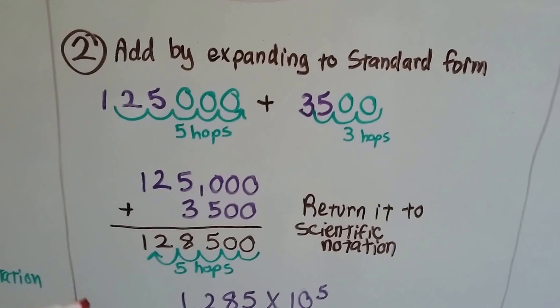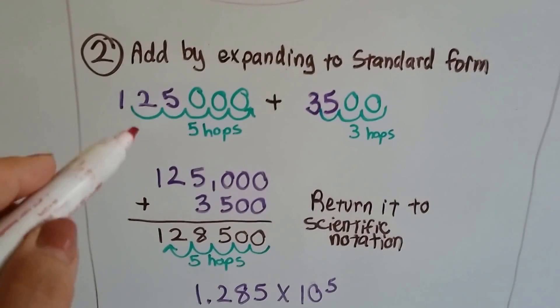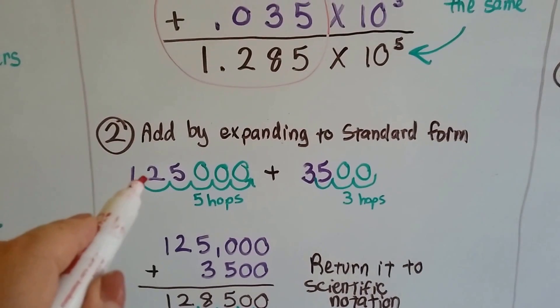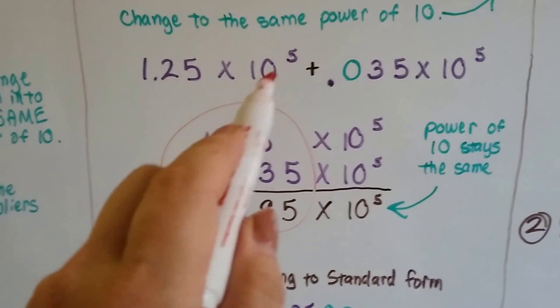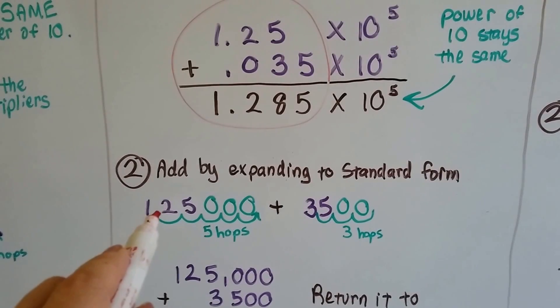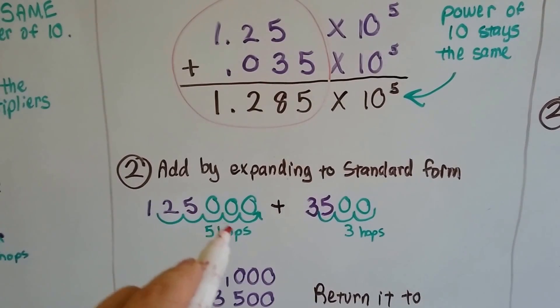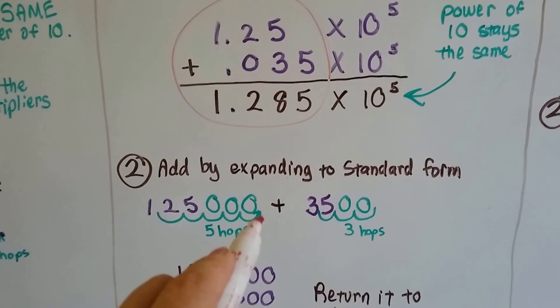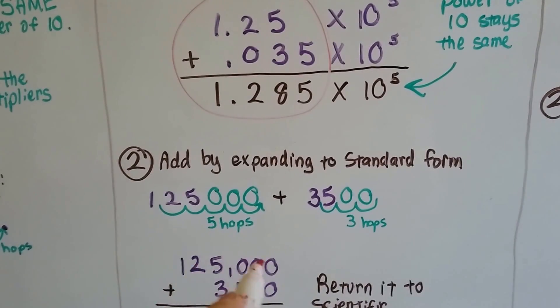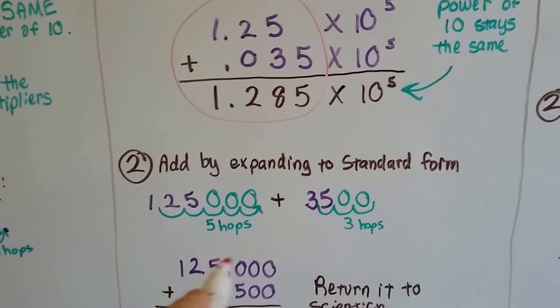Here's doing it by expanding them into standard form. The 1.25 is going to go 5 hops because it was to the 5th power. So we're going to go from between the 1 and the 2, we're going to go 1, 2, 3, 4, 5 hops. Now the decimal point's back here and we have three zeros as placeholders. So that gives us 125,000.